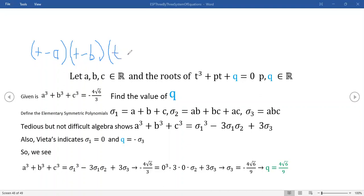Now, when you multiply this out, I've defined these elementary symmetric polynomials. σ₁ is a + b + c, that's the sum of the roots. σ₂ is all possible products of two of the roots. And finally, σ₃ is the product of the roots, abc.